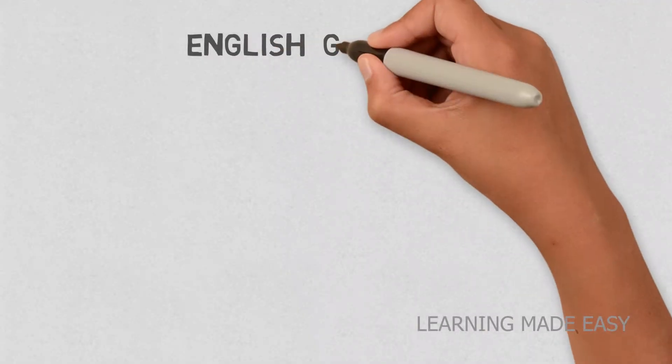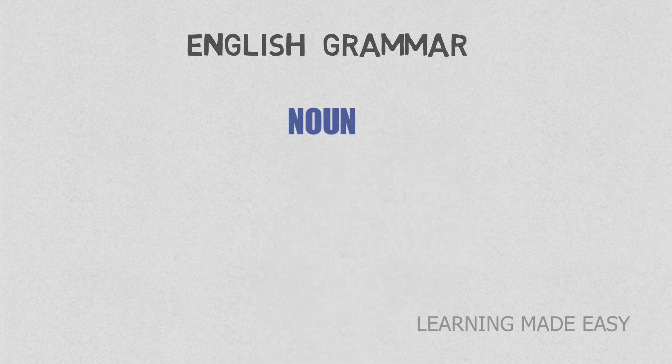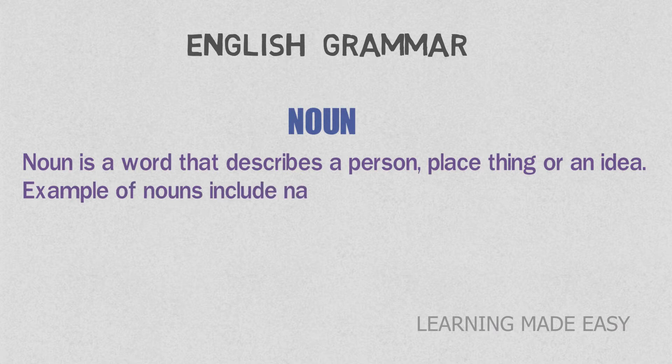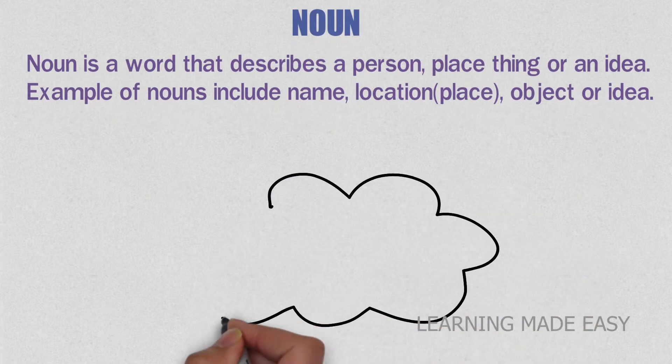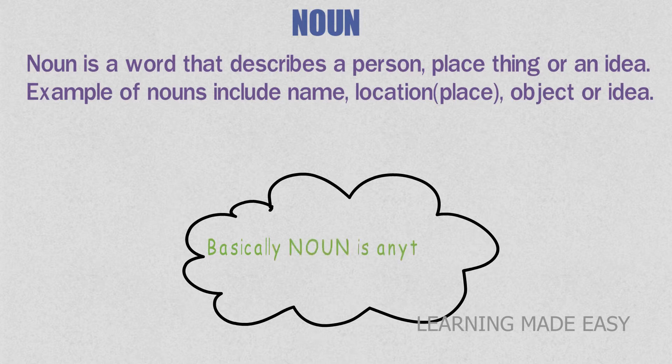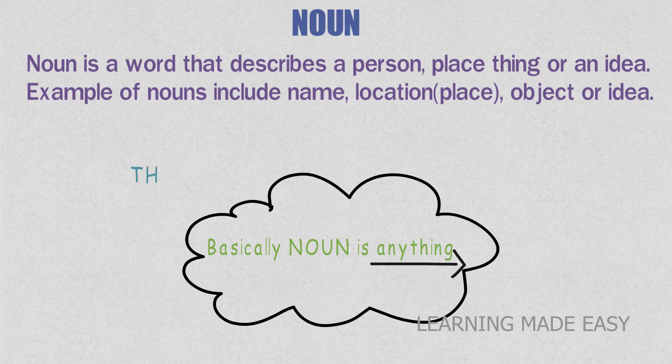English grammar. Today we will learn about nouns. A noun is a word that describes a person, place, thing, or an idea. Examples of nouns include names, locations, objects, or ideas. Basically, a noun can be anything—it can be things, people, places, or ideas.